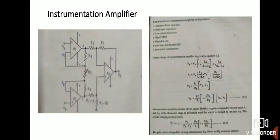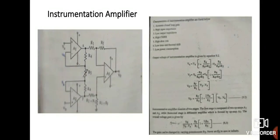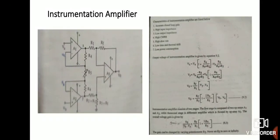Next is the instrumentation amplifier, also called the precision amplifier. The Va and Vb outputs from the transducer bridge are applied to the instrumentation amplifier for amplification, since the signal strength is very low. The circuit uses three op-amps. R5 is a potentiometer used to control the gain. Characteristics include: accurate closed-loop gain, high input impedance, low output impedance, high CMRR, high slew rate, low thermal drift, and low power consumption.